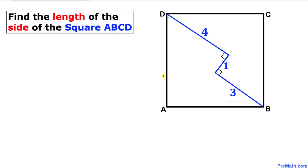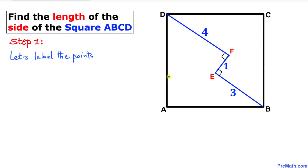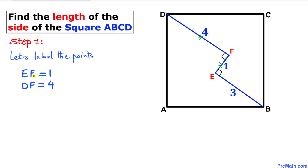Let's get started with our solution. For our first step, let's label the points — I'm going to label this point E and this point F. In this diagram, segment EF is one unit, line segment DF is four units, and line segment EB is three units.